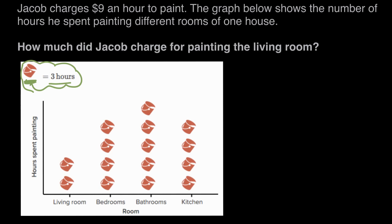We're asked about the living room, so on the graph we can find where it says living room and see how many buckets. Remember, each of these buckets equals three hours of time, so he spent three hours plus another three hours — a total of six hours painting the living room.